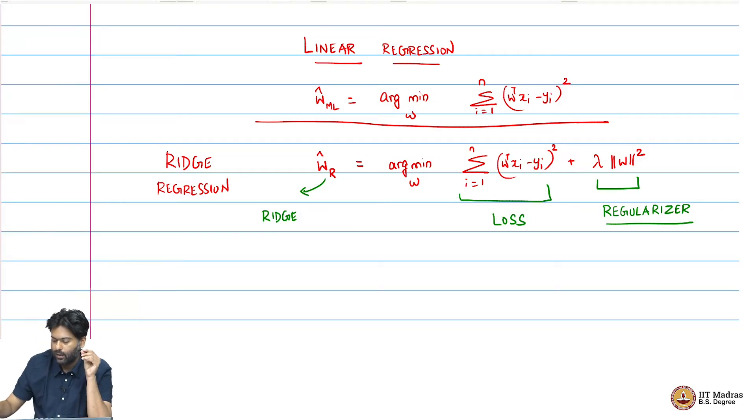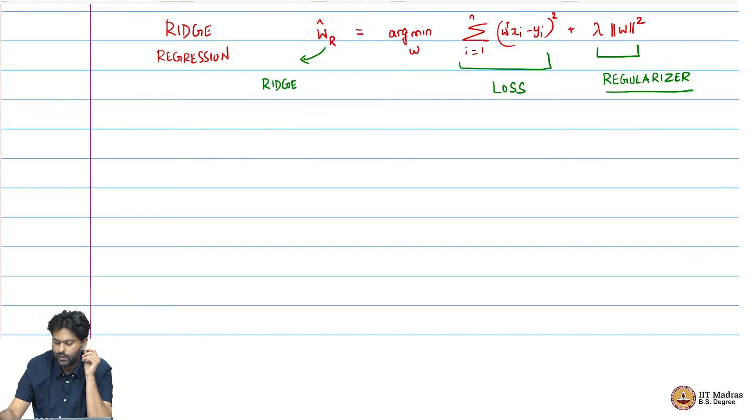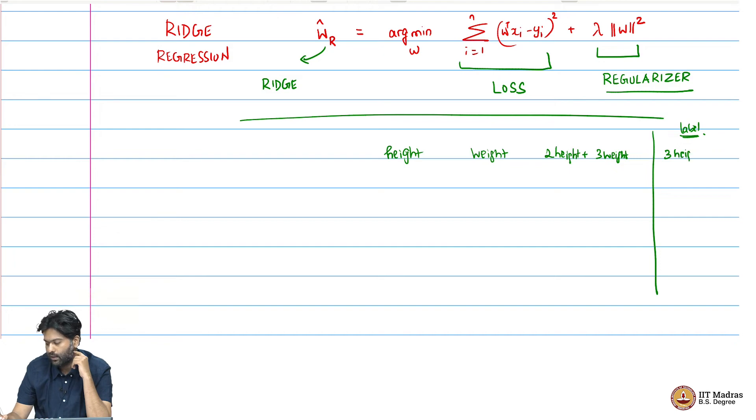For example, if you had height, weight, and 2 times height plus 3 times weight as your 3 features. And your label is a noisy version of 3 times height plus 3 times weight. There are multiple ways you can get this.